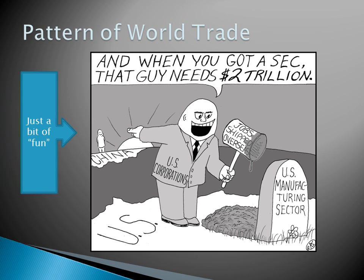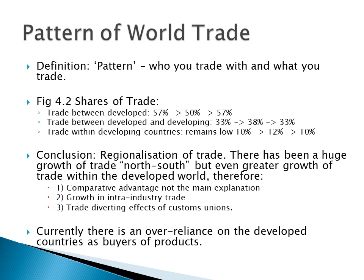We now move on to the pattern of world trade. Often when we talk about trade we talk about the volume of trade — how much we are trading, how much we are exporting, how it has grown, how open we are, and the balance of trade. But here we are moving on to talking about the pattern of trade: not how much we are trading but who we trade with and what we are trading. This will have a big impact on exam questions, as it opens up the whole area of regionalisation versus globalisation, and also makes very relevant the question of comparative advantage and whether it explains trade.